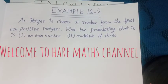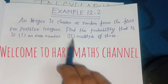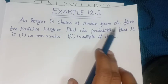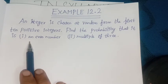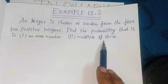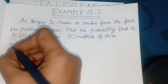Example 12.2: An integer is chosen at random from the first 10 positive integers. Find the probability that it is (i) an even number and (ii) multiple of 3. Solution: